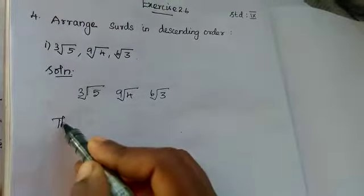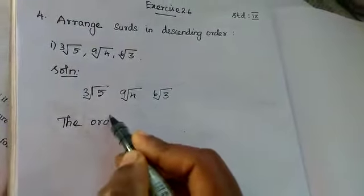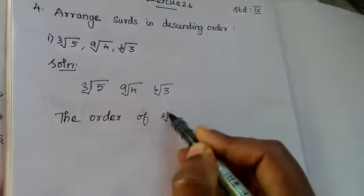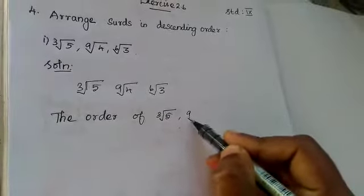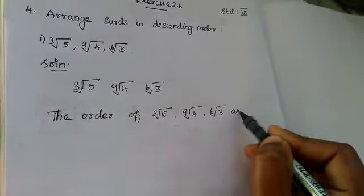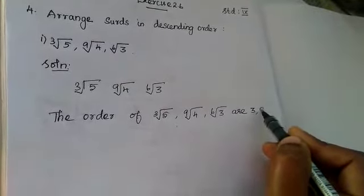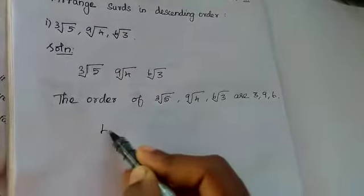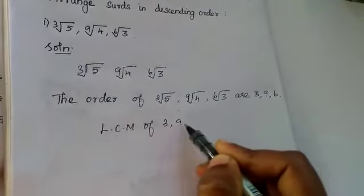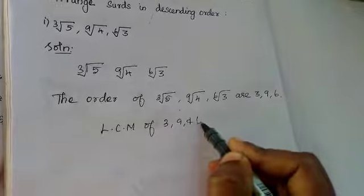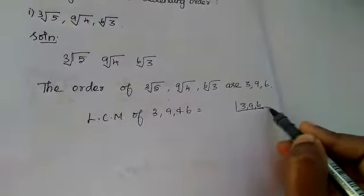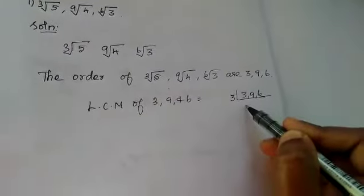Now the order of cube root of 5, 9 root of 4, 6 root of 3 are 3, 9, 6. Now we want to take LCM, LCM of 3, 9, and 6. Now take all 3 numbers, divide by the common divisor, divided by 3. Now 1, 3 is 3.